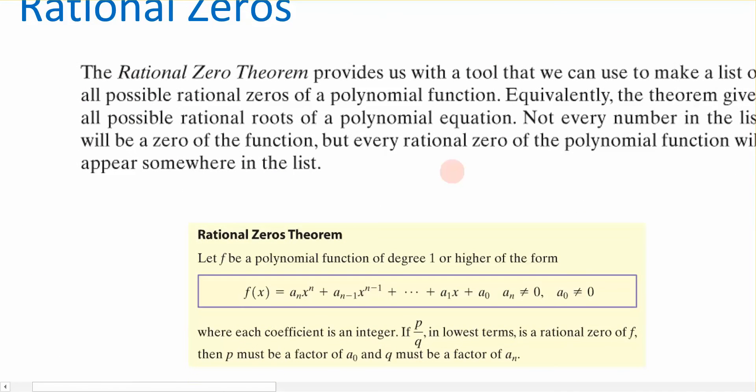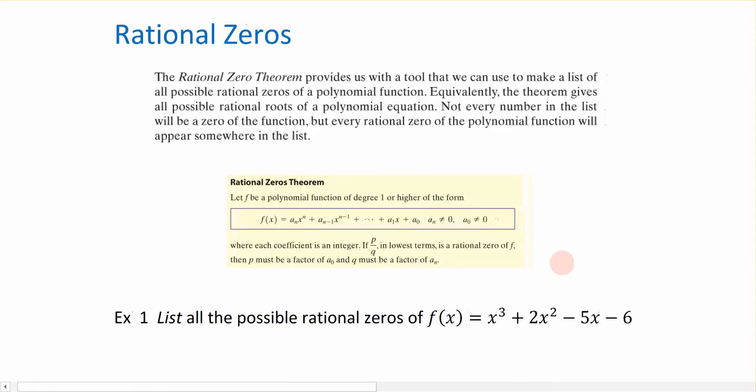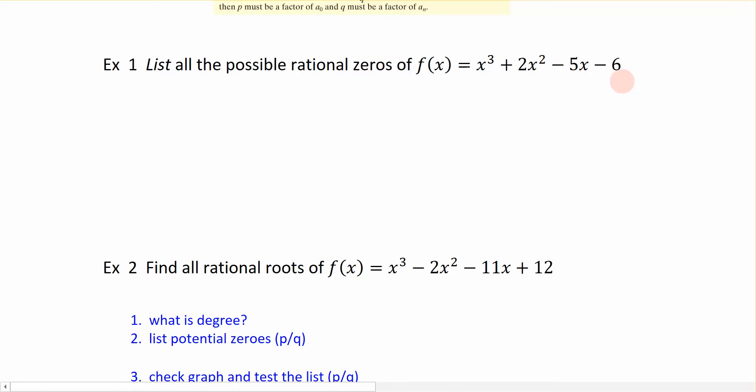Well, we have the rational zero theorem, which is right here in the center. And it's going to give us some sort of tool that we can use to begin breaking up a polynomial function into its factors. So rather formally, it's given to you right here. We're going to take the idea that we can use this ratio of p over q to then determine its possible roots. All of that is kind of hard to understand unless we actually just focus on an example here.